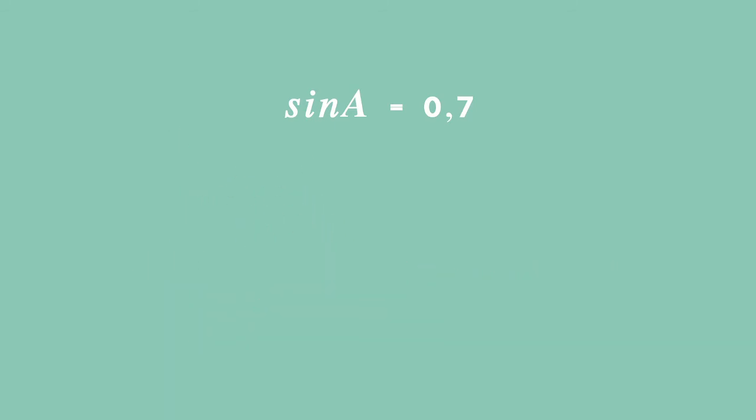The method we are going to use in order to solve the general solution is first, find a reference angle, and then place our ratio in the correct quadrant in order to find the general solution. If we've got sine of A is equal to 0.7, we find a reference angle.